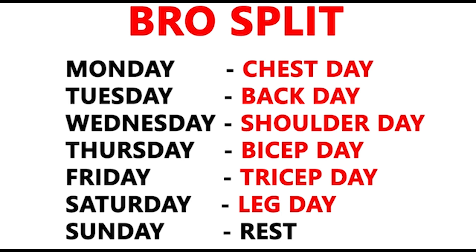The bro split dedicates each day to a single muscle group. For example: Thursday biceps, Friday triceps, Saturday legs, Sunday rest. For each muscle group, you perform 5 to 6 exercises, 3 sets each, totaling 15 to 18 sets. Each muscle is trained only once per week. You go to the gym 6 days per week and do single muscle training per day. The bro split is not recommended if you are a beginner.